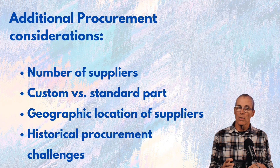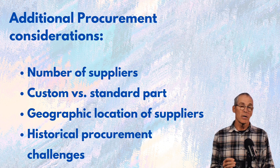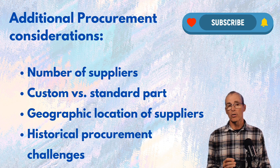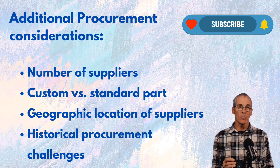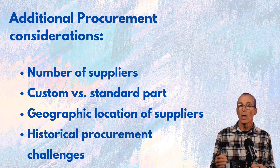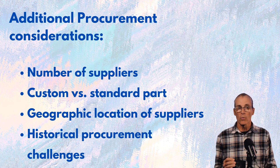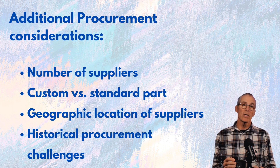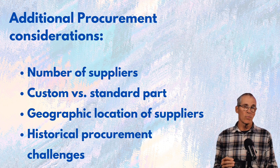Some other things to consider: the number of suppliers available. If there's only a sole supplier, it's going to make that part much more critical. Is it custom, straight off the shelf, or did it have to be modified to fit your plant? What about the geographical location of suppliers? There was a period in the United States where large GSU power transformers could only be obtained from overseas — either rebuilt, refurbished, or rewound — which drives how critical that component would be. We also look at historical procurement challenges and whether certain times of year make it more difficult to get certain products.